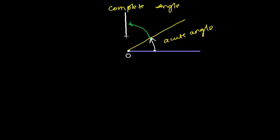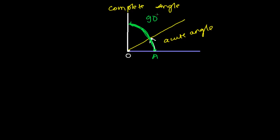If I move further from there — suppose I move almost up to here — my angle will be somehow like this, almost a straight upright line. This complete angle from my initial point A to this point, if I measure with a protractor, will be 90 degrees.